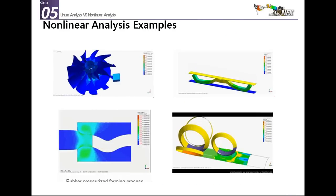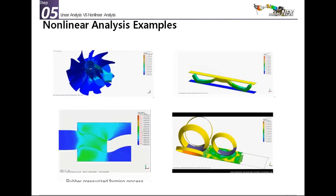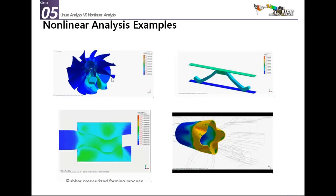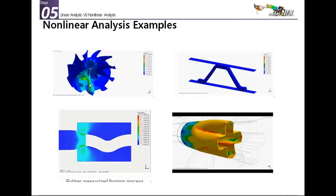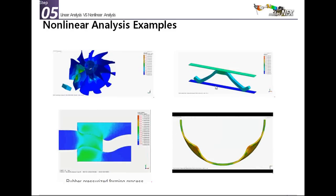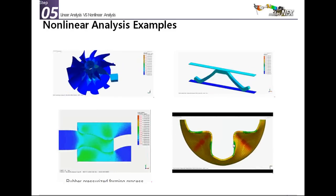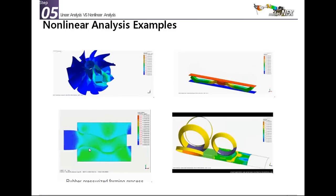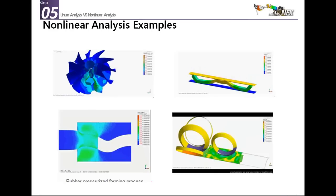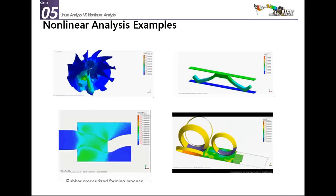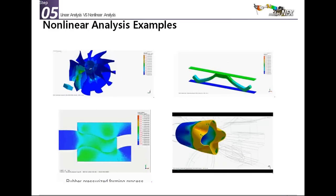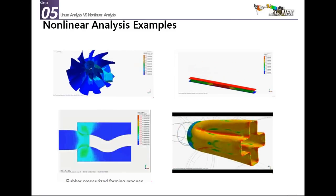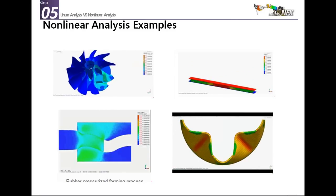Some examples of nonlinear phenomena include impacts on a propeller, rubber deformation, metal forming, and rubber materials. Today I'll talk about nonlinear static analysis, but there is much more — you also have nonlinear dynamic analysis, also called explicit, which will be the subject of another webinar. For example, turbine impact and metal forming are nonlinear dynamic examples because they happen in a very short time.